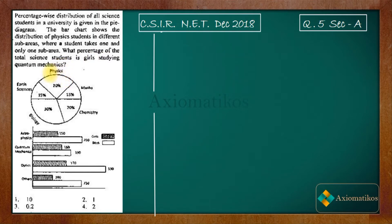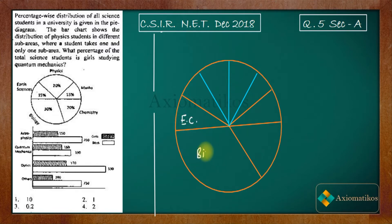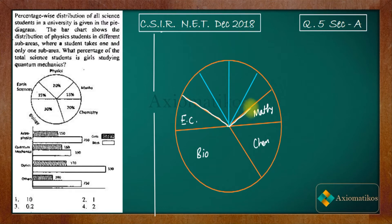Let us try to draw this pie chart in a bigger way. I have drawn this pie chart in a bigger way. You have these subjects: earth science, physics, maths, chemistry, and biology. This sector here consists of physics students.